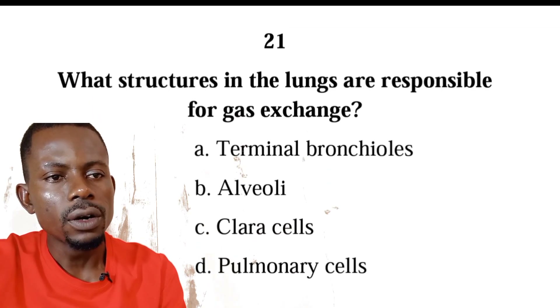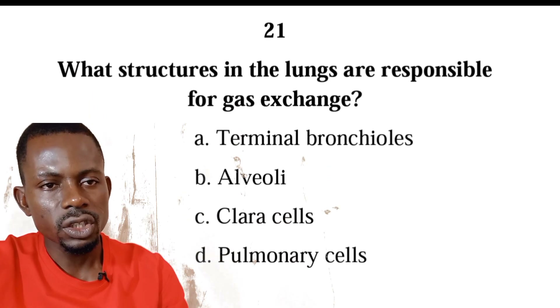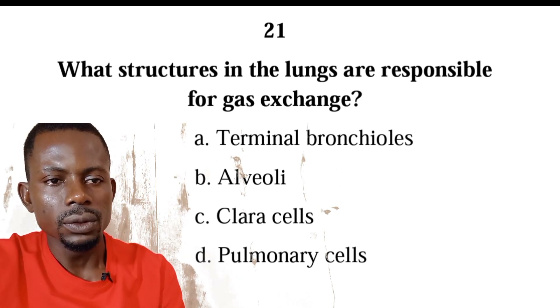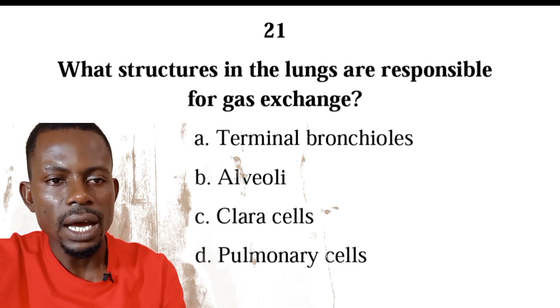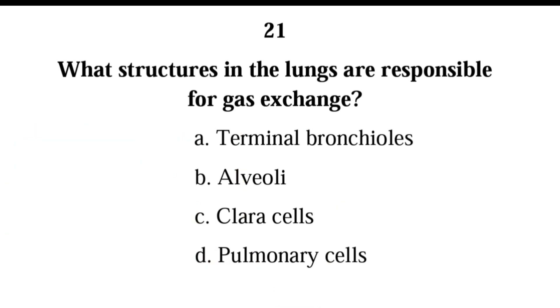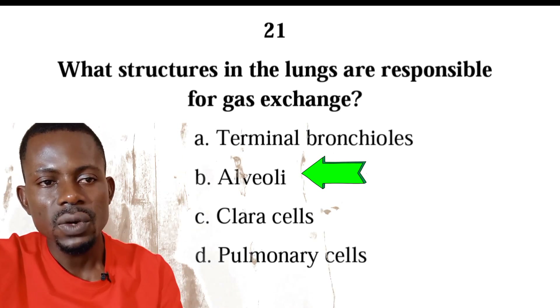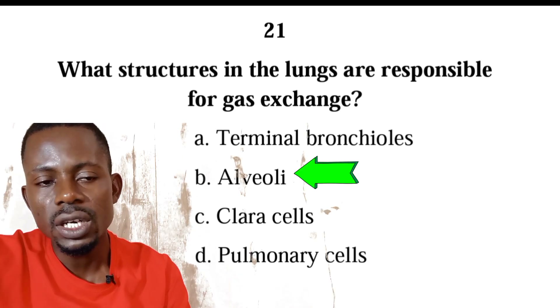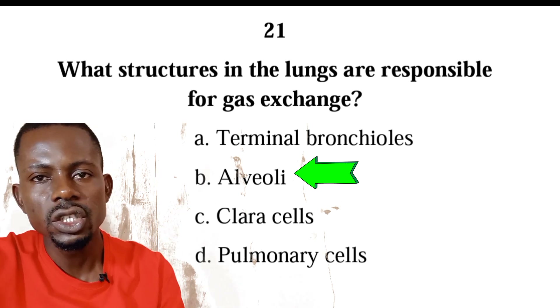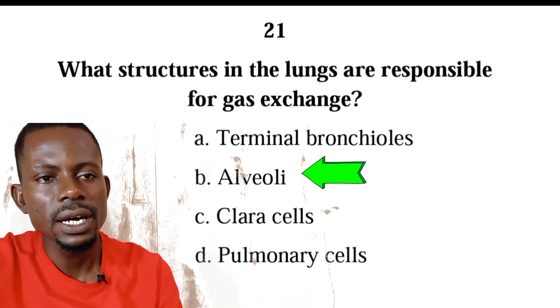Number twenty-one: what structures in the lungs are responsible for gas exchange? We have terminal bronchioles, alveoli, Clara cells, or pulmonary cells. The correct answer is B, alveoli. Alveoli are the functional units of the lungs and they are responsible for gas exchange with the pulmonary capillaries.